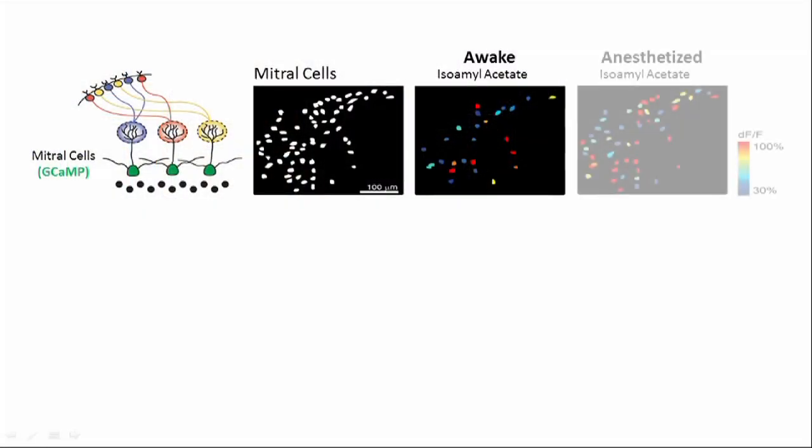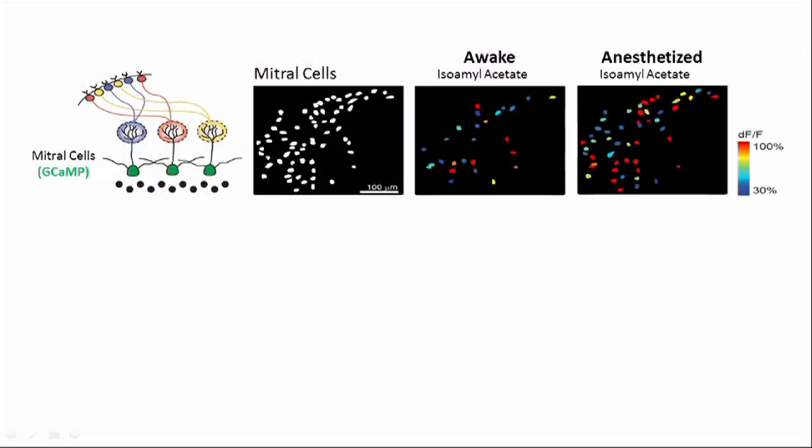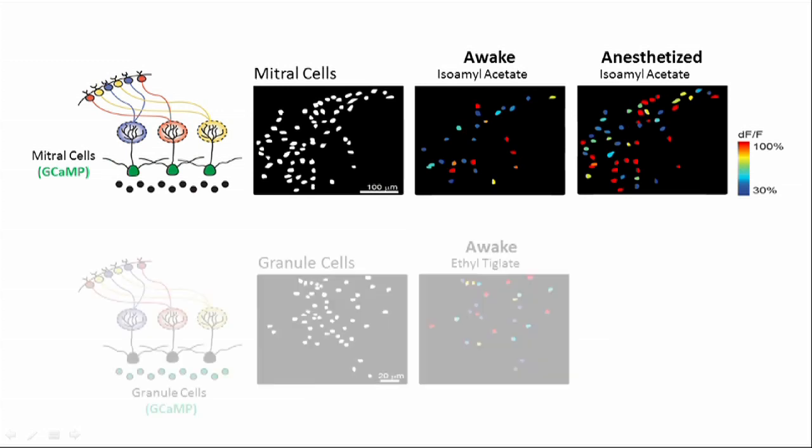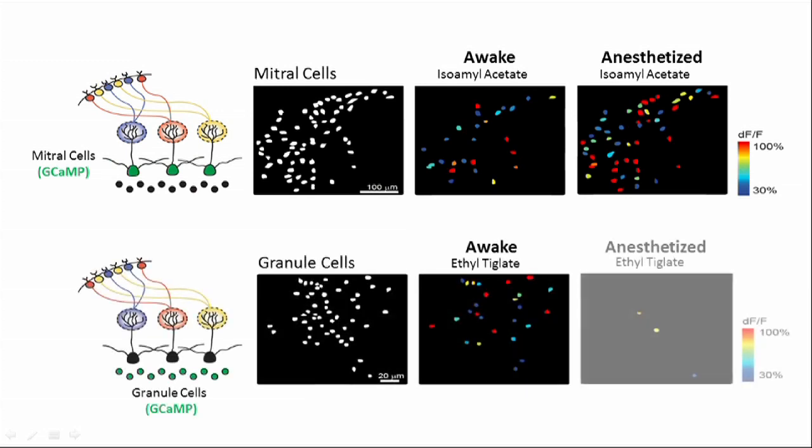We find that anesthesia increases odor responses of mitral cells. In contrast, granule cell activity is dramatically reduced with anesthesia. These results suggest that, in awake animals, mitral cell odor representations are made sparse by the action of local inhibitory circuits, and that studies in anesthetized animals may have underestimated the action of granule cells.